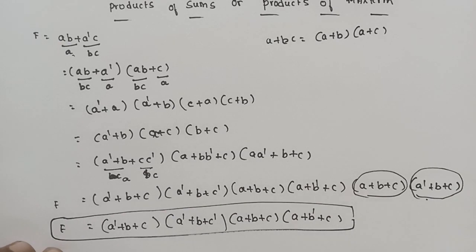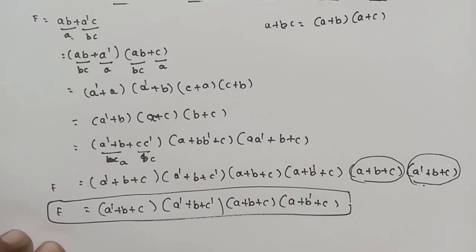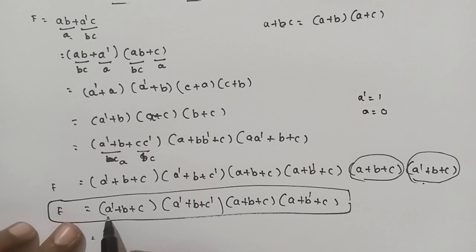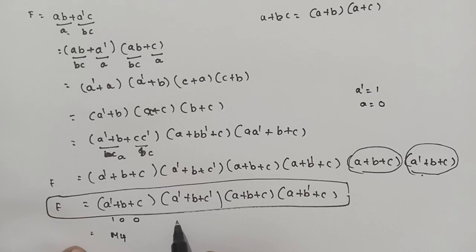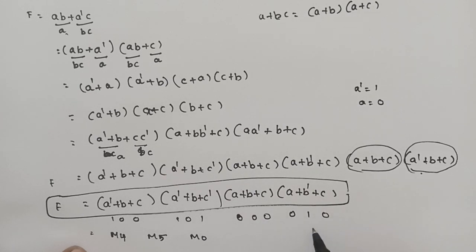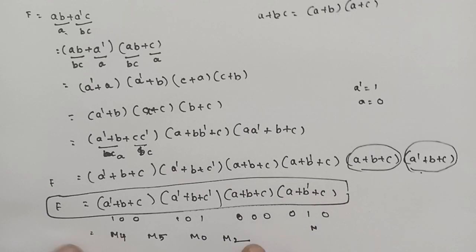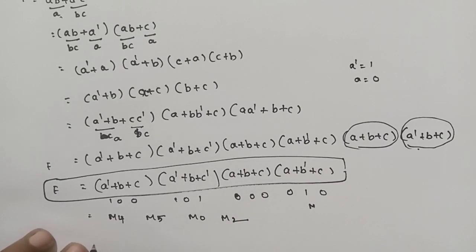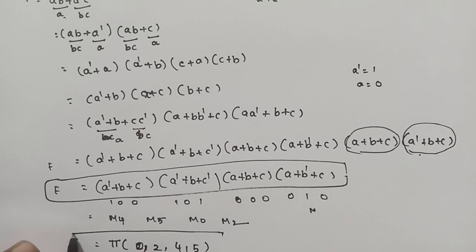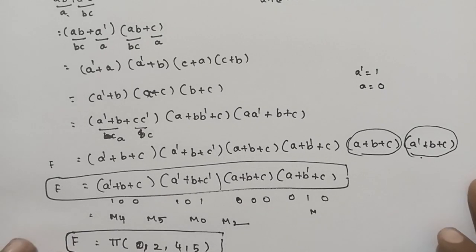Now for the product of maxterms notation: maxterms give 0 at minterm indices. M0 is 0,0,0 — M2, M4, and M5 correspond to outputs of 0. So the maxterm indices are 0, 2, 4, 5. This is the canonical Products of Maxterms formula, which we express using Boolean notation.